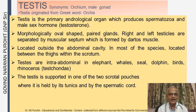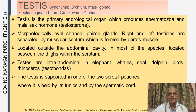The testes, also known as the orchium or male gamete, originated from the Greek word 'orchis'. The testes are the primary andrological organs which produce spermatozoa and the male sex hormone testosterone. They are morphologically oval in shape and are paired glands. The right and left testicles are separated by a muscular septum formed by the dartos muscle.